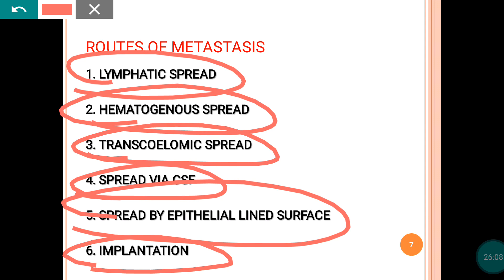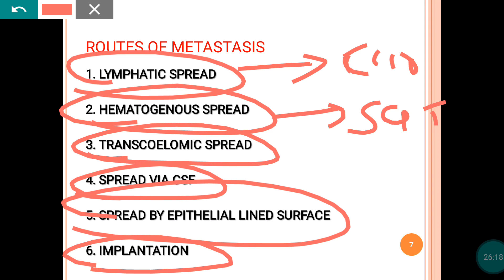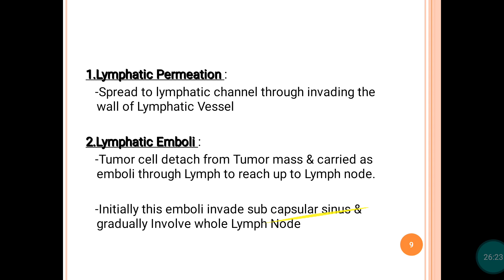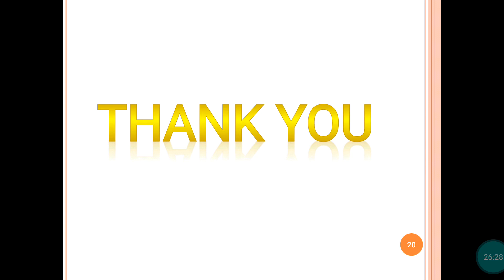To summarize, remember these six routes of spread: lymphatic, hematogenous, transcelomic, spread via cerebrospinal fluid, spread by epithelial-lined surface, and implantation. Usually carcinoma prefers the lymphatic spread while sarcoma usually prefers hematogenous spread. Hope this video is beneficial to you in understanding the spread of the tumor. If you like the video, subscribe to the channel and press the bell icon to get notified when new videos are posted. Thank you very much.